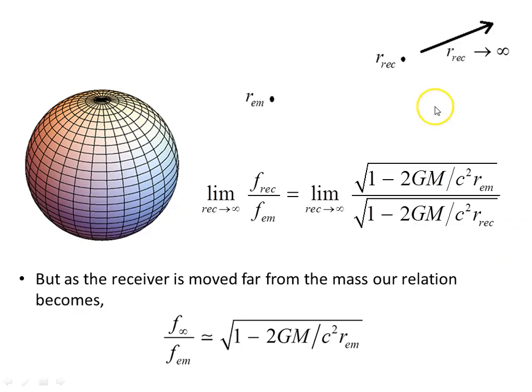What we want to now do is let the receiver move far away off towards infinity, so we want to increase the distance of the receiver a long way off from the source mass. If we allow the receiver, the distance of the receiver to recede to infinity, to approach infinity, this expression here now will reduce to, as the receiver has moved far from our mass, our relation becomes this object here.